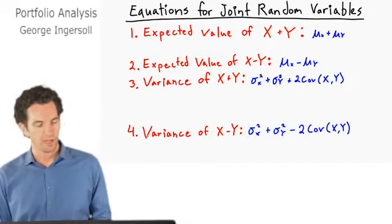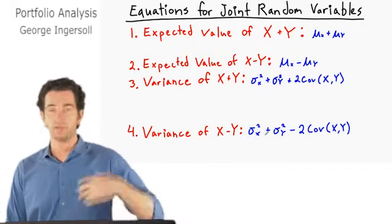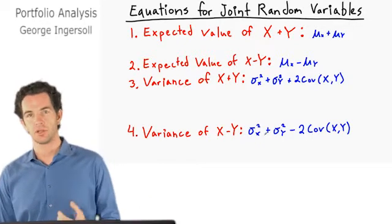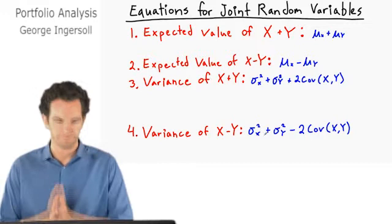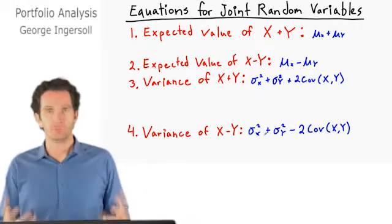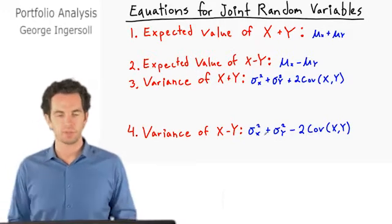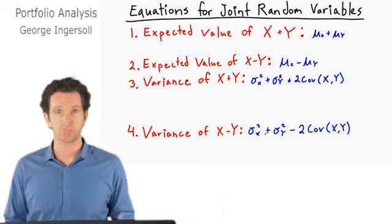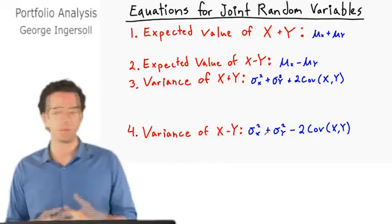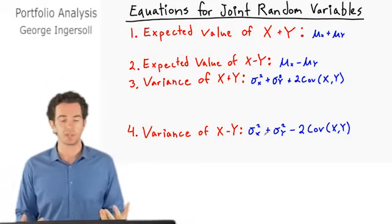It's getting a little bit tricky. And the variance of X minus Y is going to be the variance of X plus the variance of Y minus two times the covariance of X and Y.